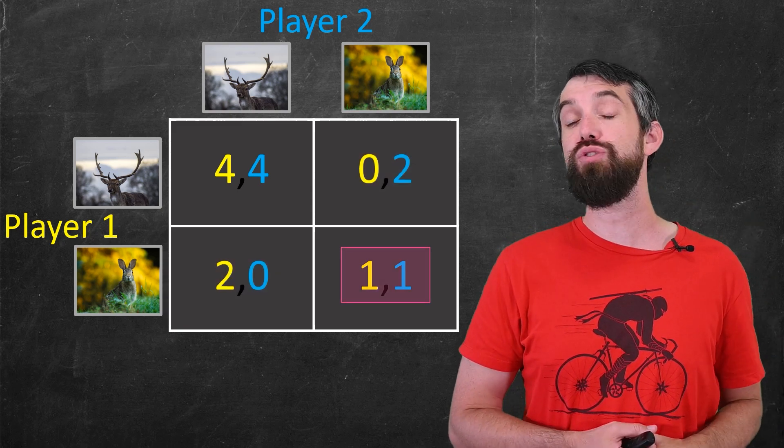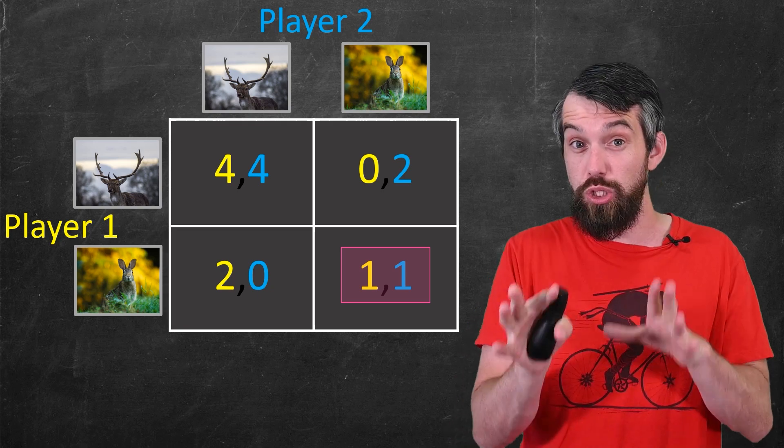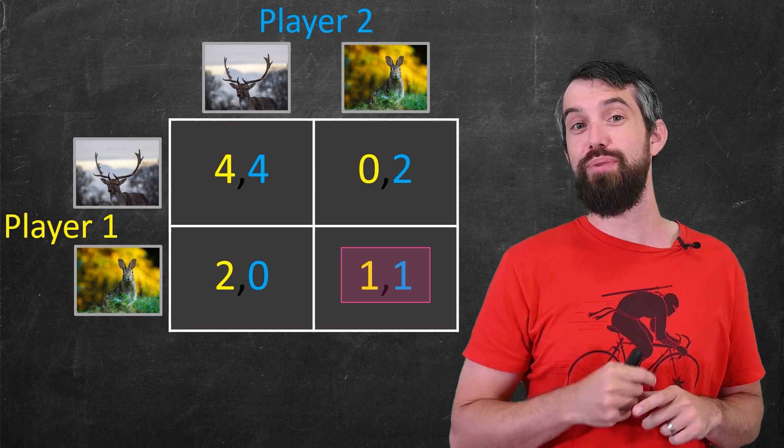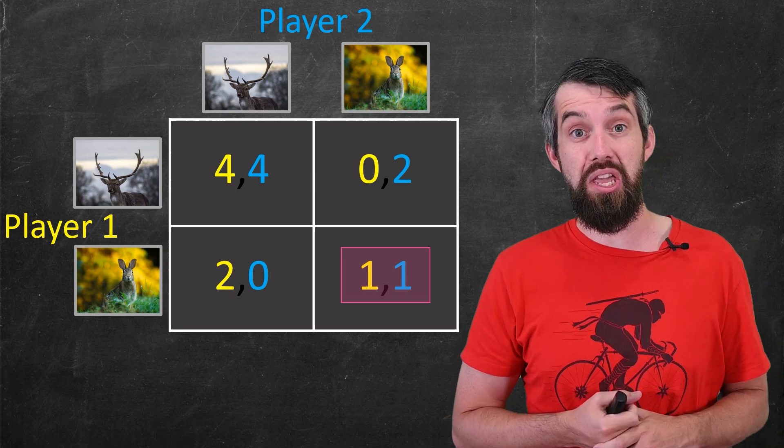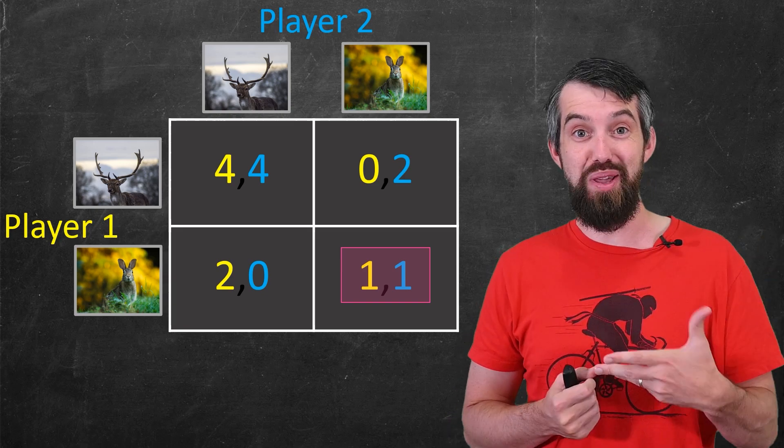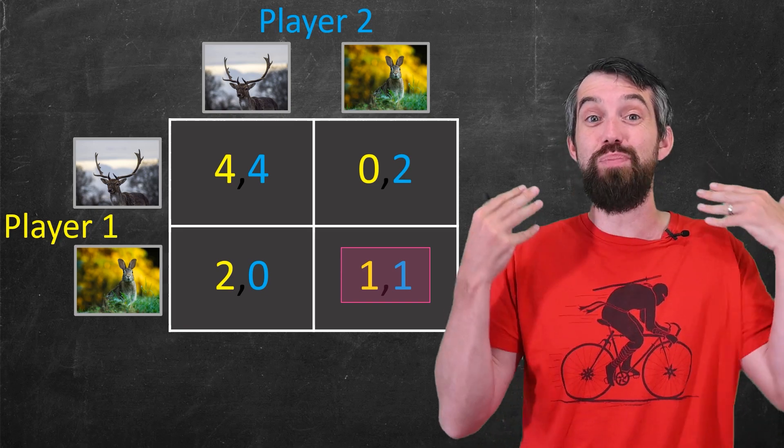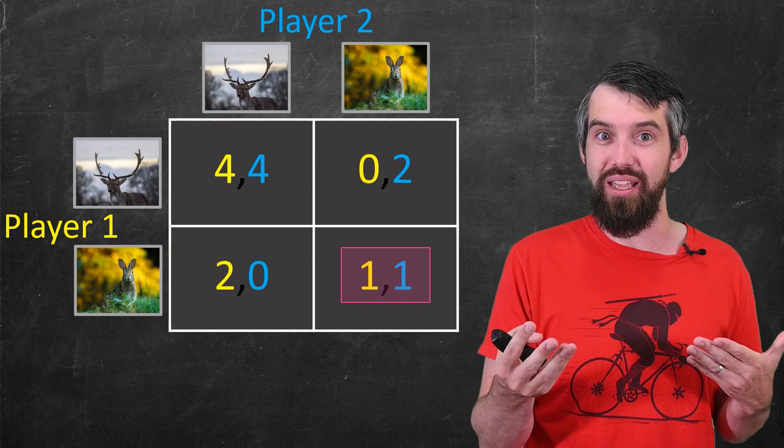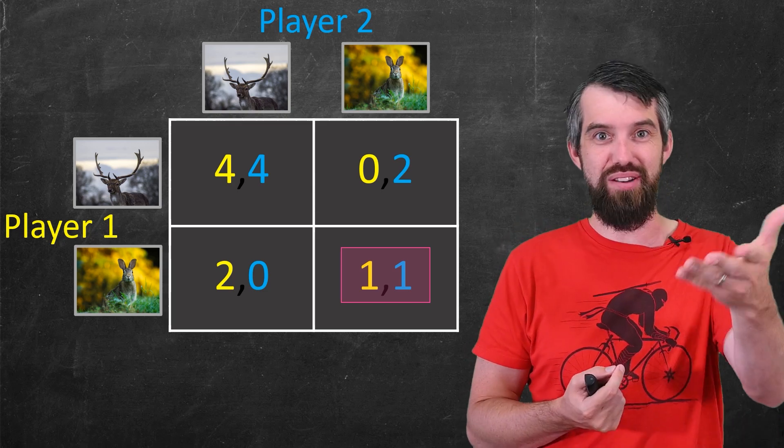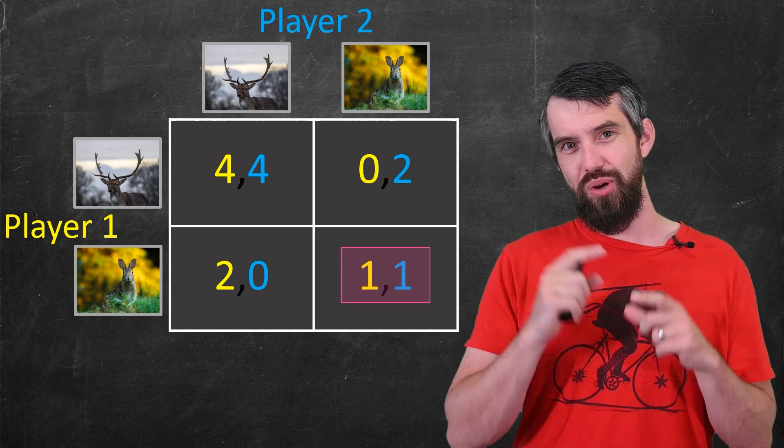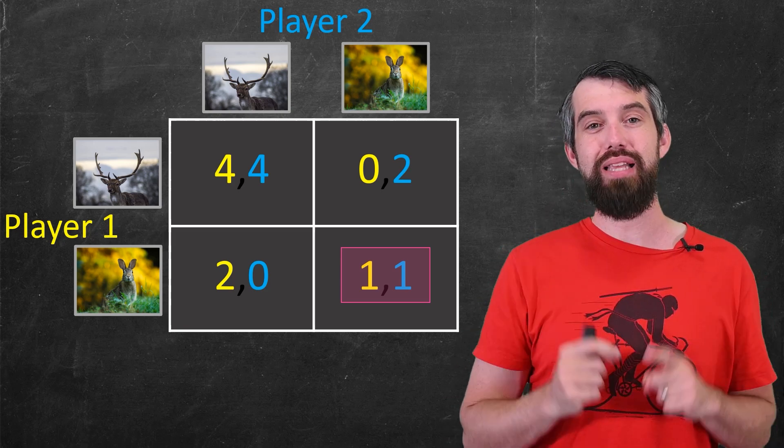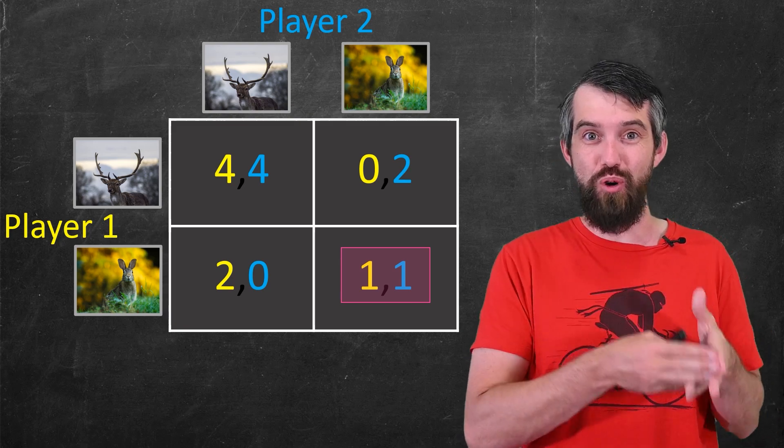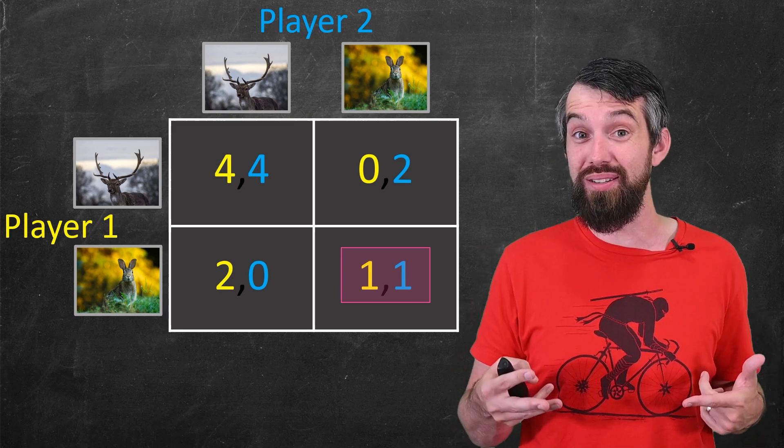But 1-1 actually is again. I know it's a smaller number than 4-4, but think about it. If I told you I was going to play hare, what would you do? You'd play hare as well. And then if you told me that you were playing hare, what should I do? I'd play hare as well. I wouldn't want to switch to stag unilaterally because then I would just go down to 0 if I knew that you were playing hare. So this also has that sense of stability.